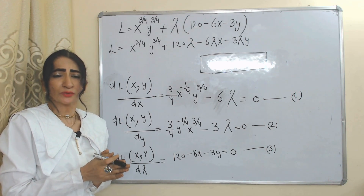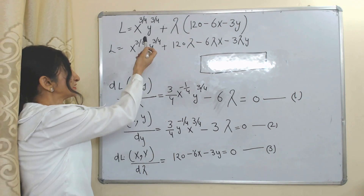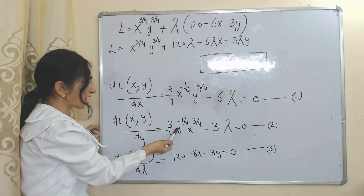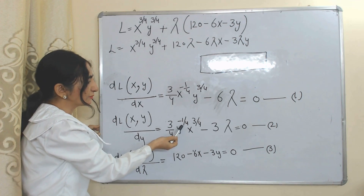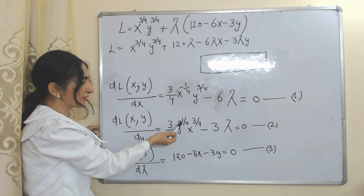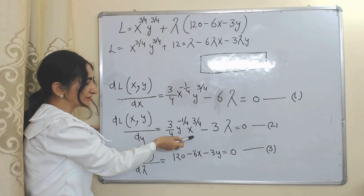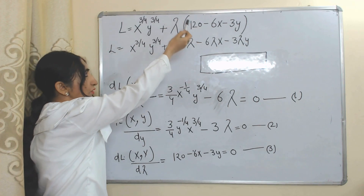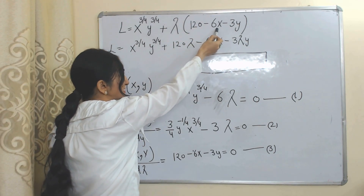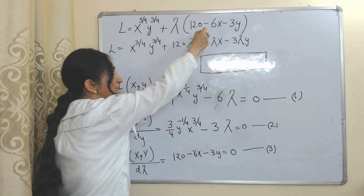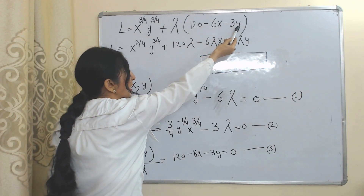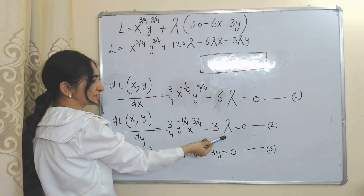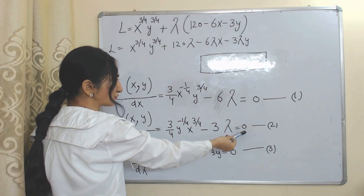Now we do the partial derivative with respect to y. The power comes in front of the variable and we subtract 1 from it, giving minus 1/4. x remains as it is since we are differentiating with respect to y only. There is no y in 120 and no y in 6x, so those terms become zero. The derivative of 3y is 3, and 3 multiplied by lambda becomes minus 3 lambda. We set this equation equal to zero — this is our second equation.